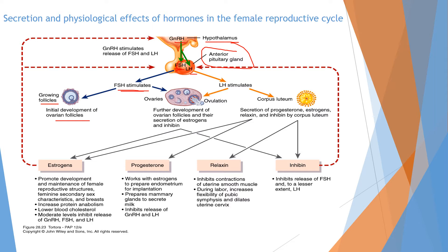Follicle stimulating hormone also plays a very vital role in ovulation, meaning the development of the ovarian follicle and the secretion of estrogen and inhibin are promoted under the influence of FSH.